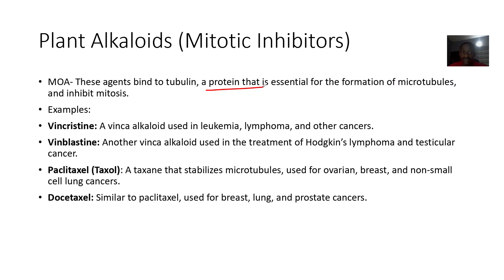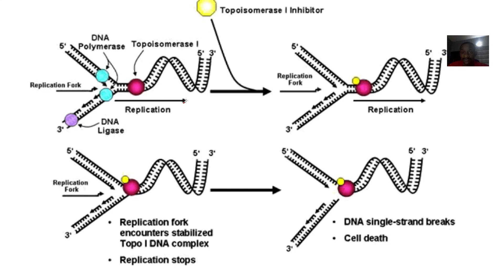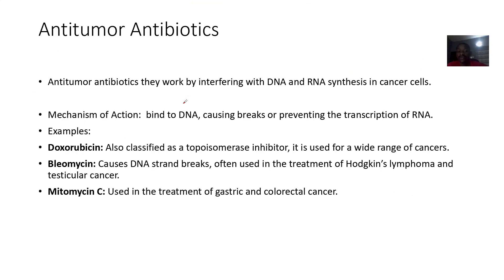Topoisomerases are enzymes that help in unwinding DNA. Topoisomerase inhibitor drugs stop those enzymes, so the DNA will not be unwound — meaning there will be no DNA division. Examples of these drugs include doxorubicin, etoposide, and irinotecan. They stop the enzymes that help the DNA split.